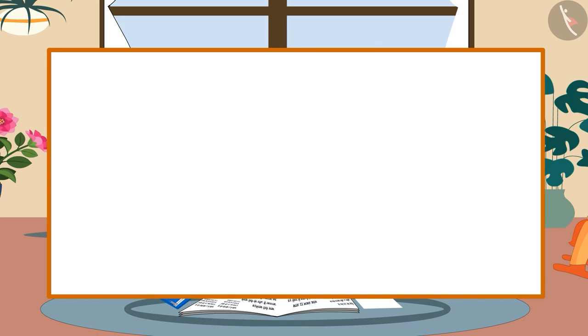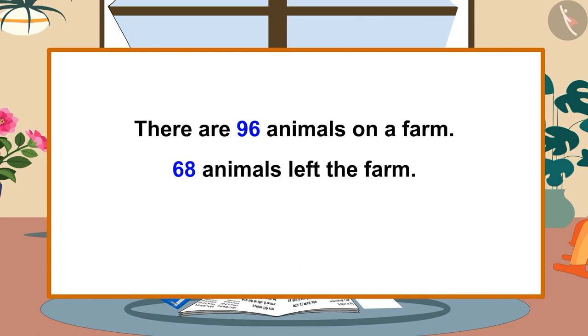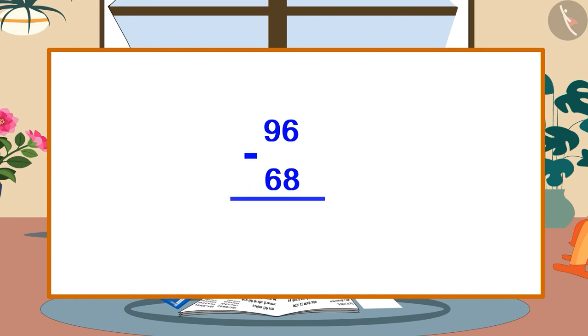The last question is that there are 96 animals on a farm. 68 animals left the farm. How many animals are left on the farm now? 96 minus 68 is equal to what? Find the answer and share it with your family and friends. In this video, we learned to do subtraction with borrowing.